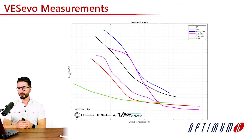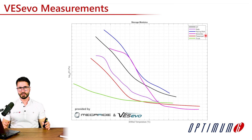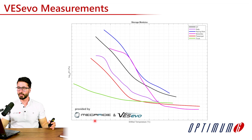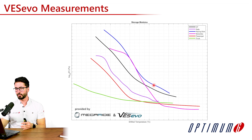Now let's have a look at examples of measuring these properties in real case scenarios provided by Megaride and Vesevo. In this first plot, we are analyzing the storage modulus for different types of tires — a GT tire, Rally, Racing Slick, Motorbike, and Passenger Car tires. It's very interesting to compare all of these different types to understand how they are designed differently. Since we perform these measurements over a temperature range, we could analyze the passenger car tire at the specific condition where it operates, and also a Racing Slick at the higher temperatures that it operates. We can compare both and see that the Racing Slick will have a lower storage modulus compared to the passenger car tire.